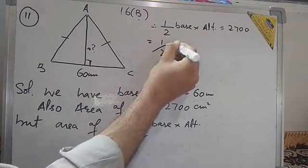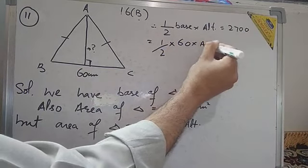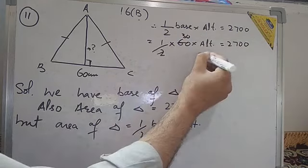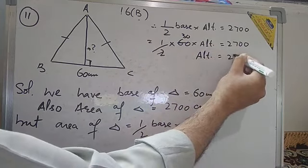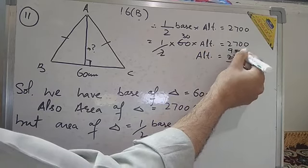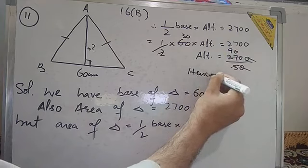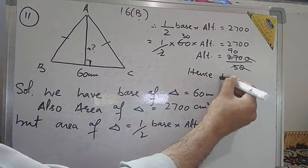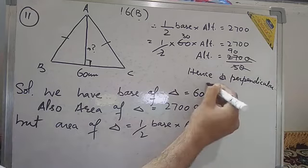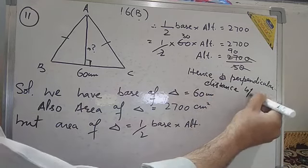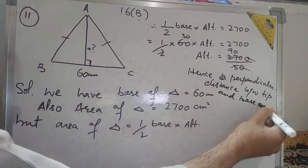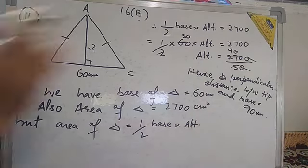Half of 60 into altitude equals 2,700. That simplifies to 30 into altitude equals 2,700. So, altitude equals 2,700 divided by 30. After cancelling zeros, 270 divided by 3 gives 90. Hence, the perpendicular distance between the tip and the base is equal to 90 cm. That was question number 11.